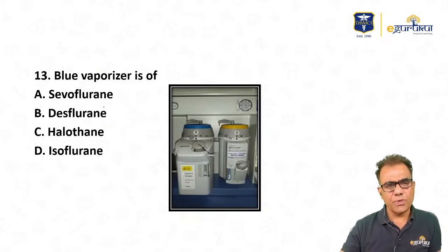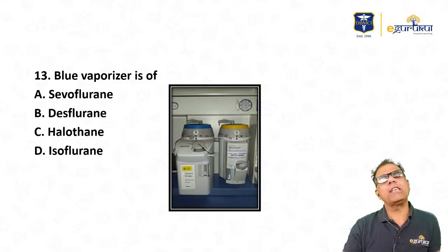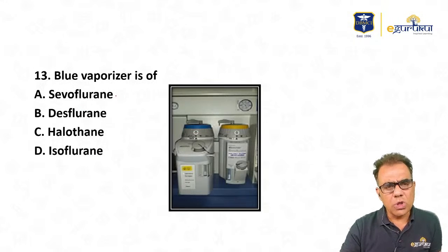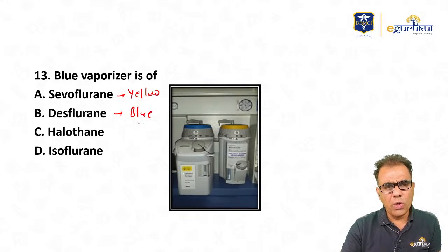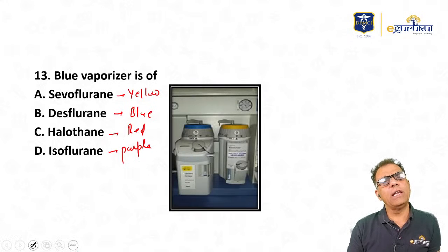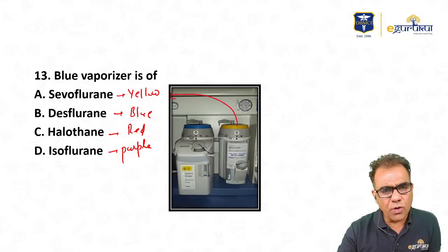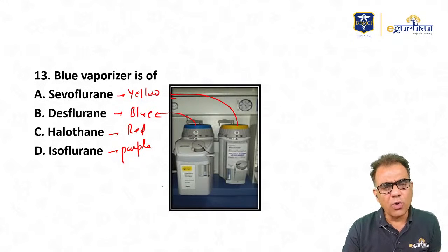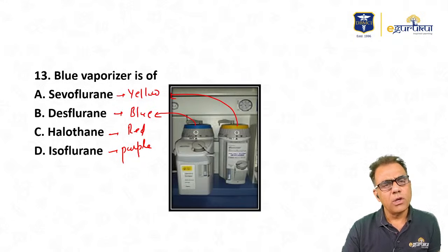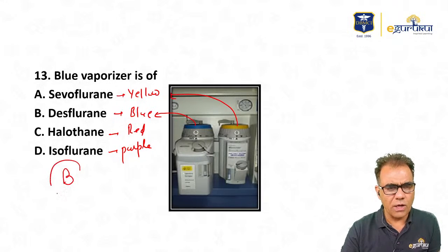Question number 13: Blue vaporizer is of — sevoflurane, desflurane, halothane, or isoflurane? Vaporizer colors: sevoflurane is yellow, desflurane is blue, halothane is red, and isoflurane is purple. Blue vaporizer is desflurane.